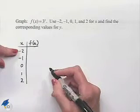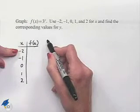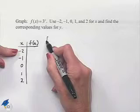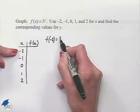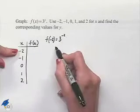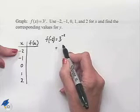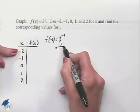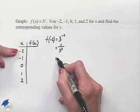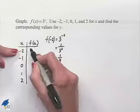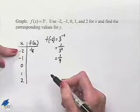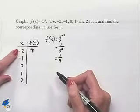Let's start by substituting in the value of negative 2. Now that would require us to evaluate f of negative 2, which equals 3 to the negative 2 power. Recall that a negative exponent requires you to rewrite this as 1 over 3 squared, which gives us 1 ninth. And so we're going to end up with a y value of 1 ninth that corresponds to the x value of negative 2.